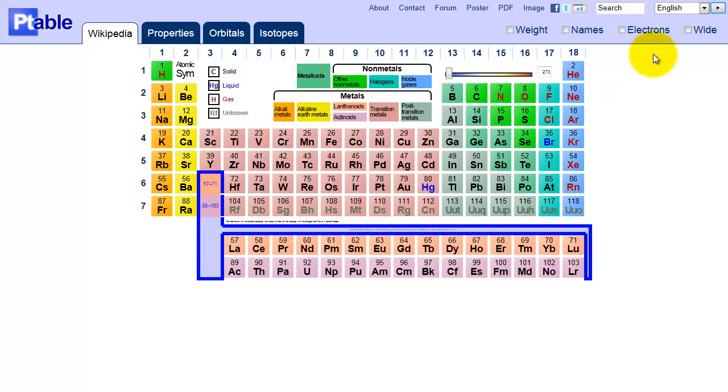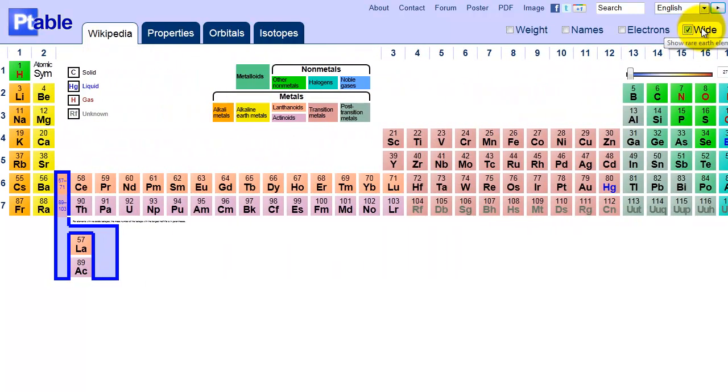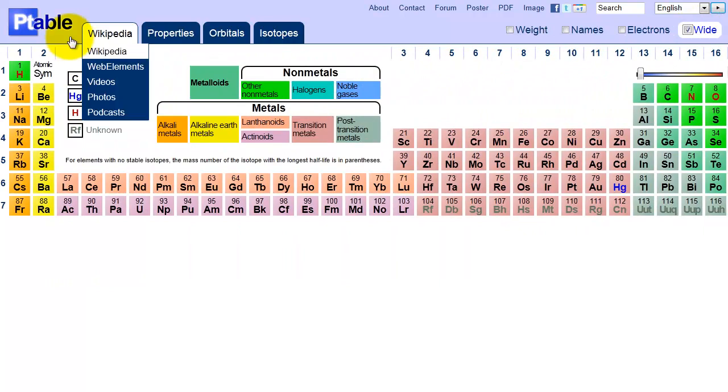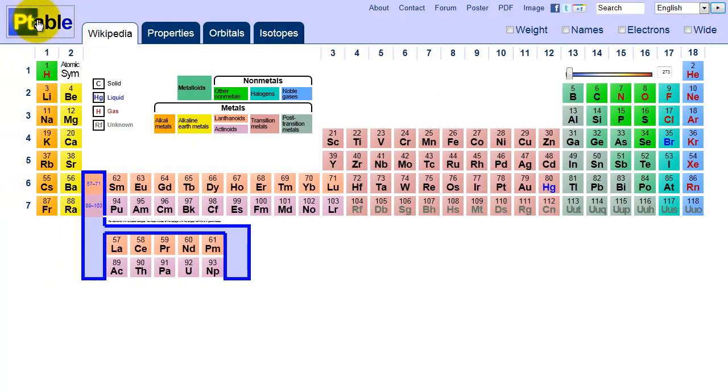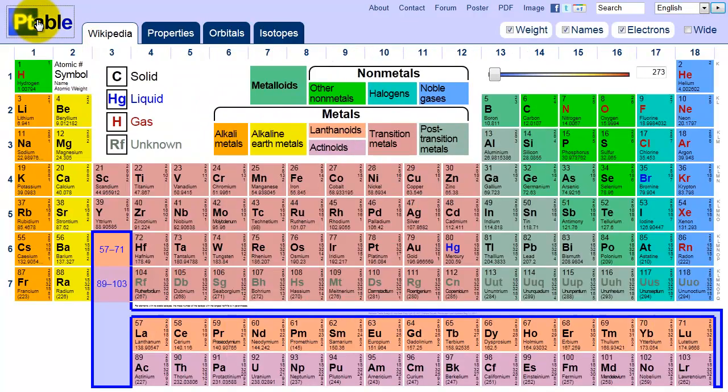Wide places the inner transition elements into their proper location inside the table. After a reset, done by clicking the site logo, it will automatically switch to fit the table to the width of your browser. The search box at top right accepts symbols, names, atomic numbers, or advanced expressions.